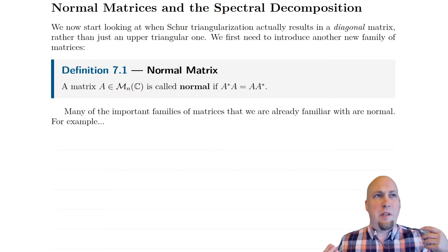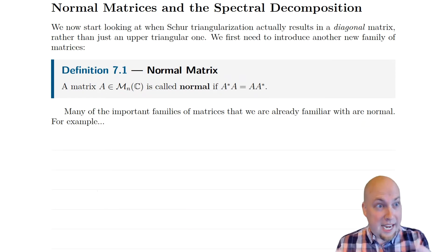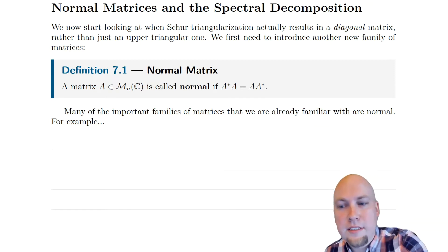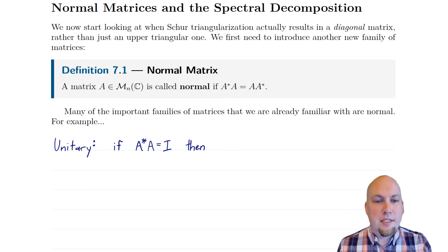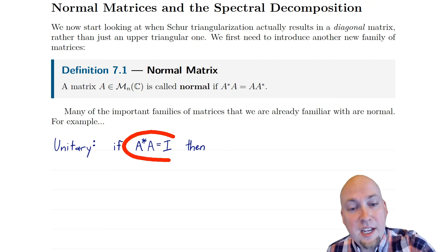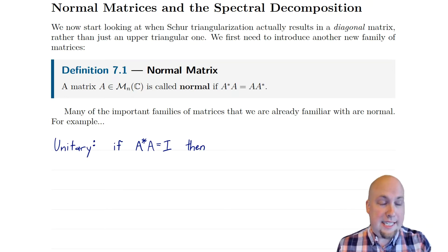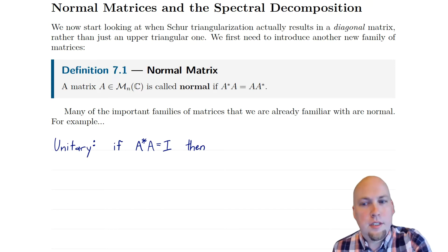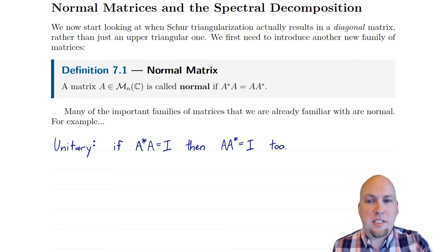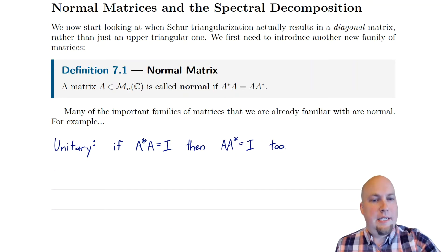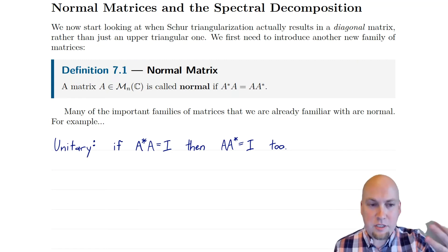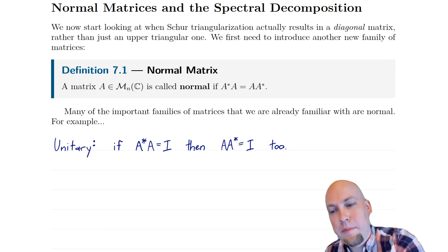It turns out that we've actually seen a lot of matrices earlier in this course and in our introductory linear algebra course, because a lot of important families of matrices are normal. For example, every unitary matrix is normal because, remember, unitary matrices are exactly the matrices for which A*A equals the identity matrix — in other words, A* is the inverse. If A*A equals the identity matrix, then AA* also equals the identity matrix, and these two things are the same. So every unitary matrix is a normal matrix.